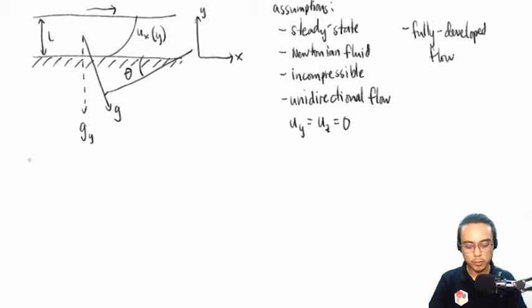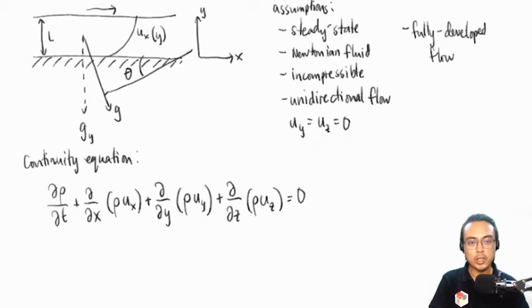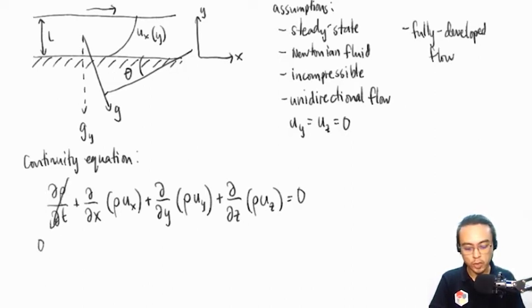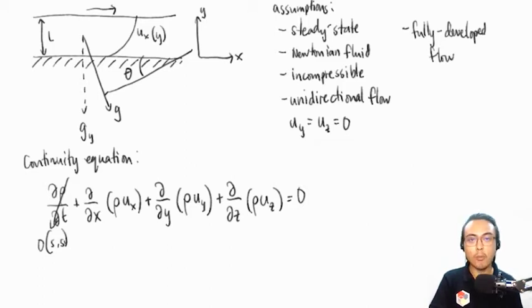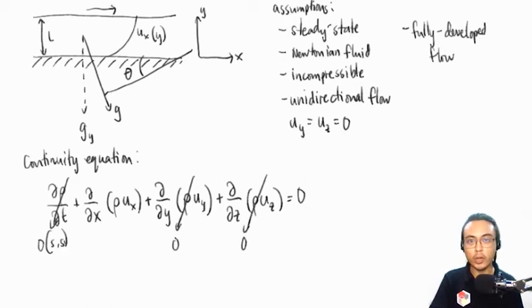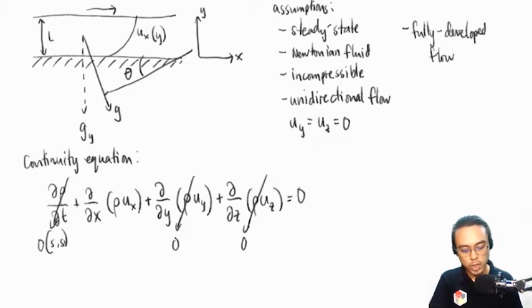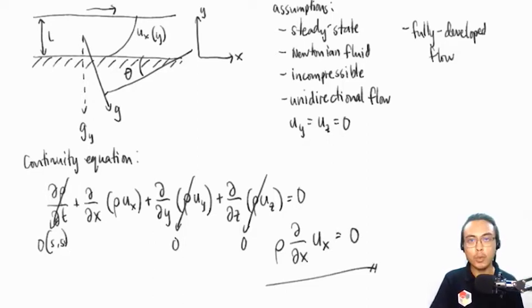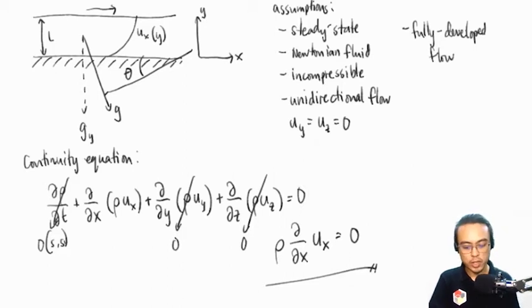Let's begin with the continuity equation in rectangular coordinates and see which terms cancel. The first term is a derivative with respect to time — automatically zero because of the steady-state assumption. For the second term, we have the derivative with respect to x of density multiplied by the x-component of velocity; we do have an x-component, so it will not be canceled. However, the last two terms cancel because we don't have y and z components of velocity due to our assumption of unidirectional flow. Therefore, the continuity equation simplifies to density times the partial derivative with respect to x of the x-component of velocity equals zero. Since density is constant, this gives us that the partial derivative of u sub x with respect to x is zero.